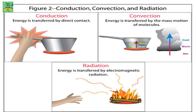Conduction, convection, and radiation. Conduction is when the energy is transferred by direct contact. Convection is when the energy is transferred by the mass motion of molecules — that is, the energy is transferred from hot water to cold water, or a hot environment to a colder environment. Radiation is when the energy is transferred by electromagnetic radiation.